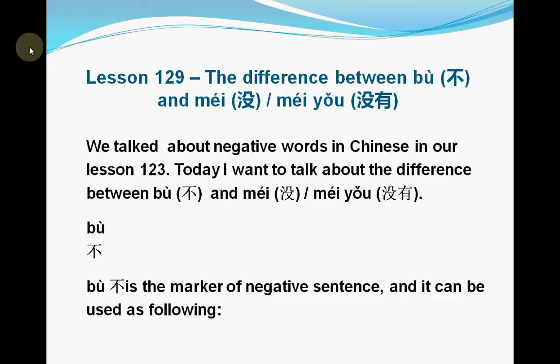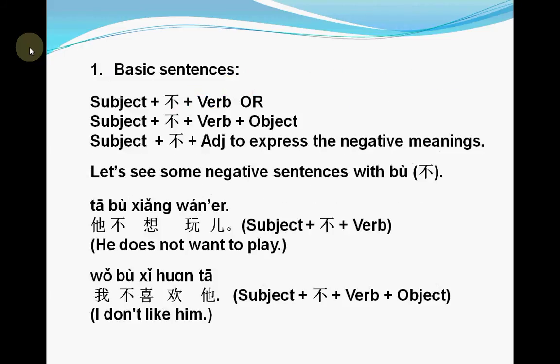First, let's look at the negative word 不 (bù). 不 is a marker for negative sentences and can be used in many situations. There are several basic sentence patterns: subject plus 不 plus verb, subject plus 不 plus verb plus object, and sometimes subject plus 不 directly followed by an adjective to express negative meaning.